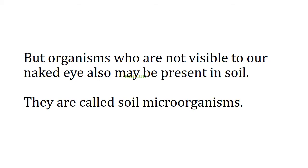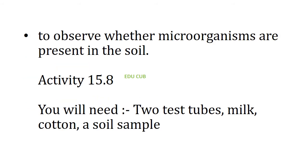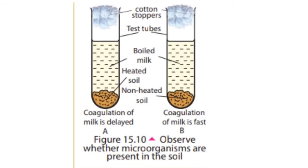Some organisms that are not visible to the naked eye may also be present in soil — they are called soil microorganisms. To observe whether microorganisms are present in soil, you will need test tubes, milk, cotton, and a soil sample. First, sterilize two test tubes in boiling water so that any microorganisms in them are destroyed. Then put equal amounts of boiled milk into the test tubes and let them cool.